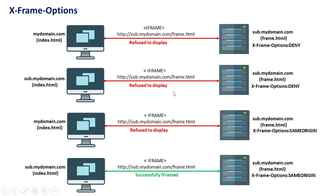Another scenario: mydomain.com/index.html iframing a URL where X-Frame-Options is same-origin — since the origins differ, it's refused. But sub.mydomain.com/index.html iframing with X-Frame-Options same-origin works because both origins match, so the page is successfully iframed. Another option is allow-from — an absolute directive that no longer works in modern browsers — which was meant to allow iframing only from a specified origin URL.